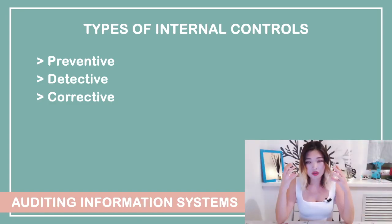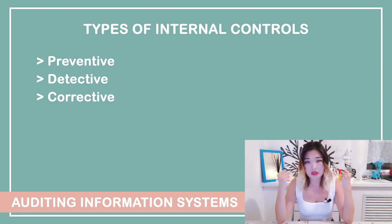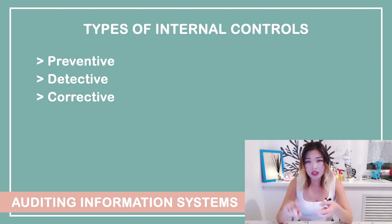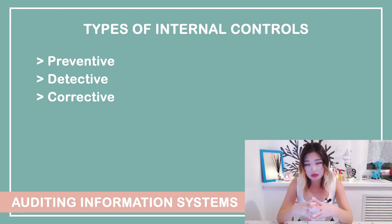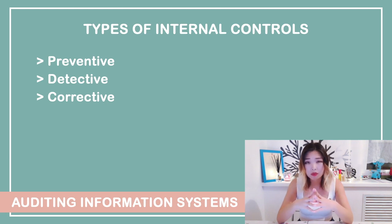In the context of organizational business processes, there are three types of internal controls: preventive controls, detective, and corrective controls. It is important to understand that preventive controls are the most desirable, because it's always better to prevent the problem instead of recovering from its impact.